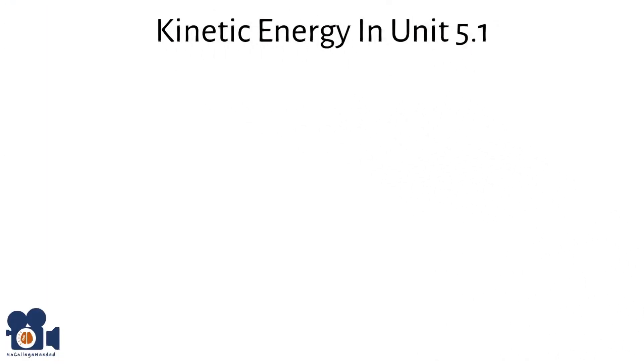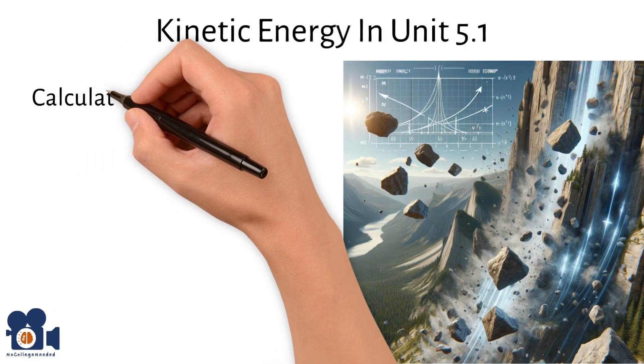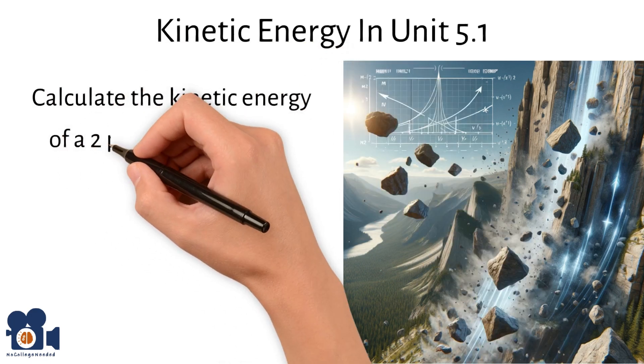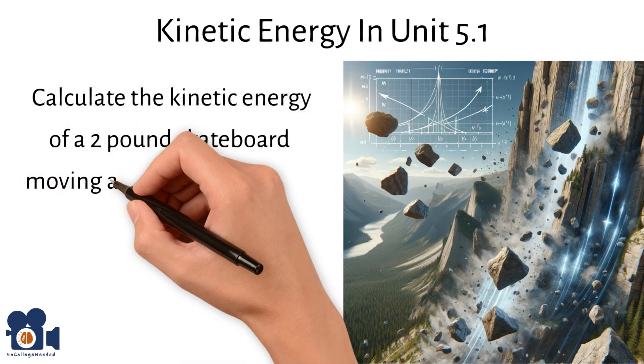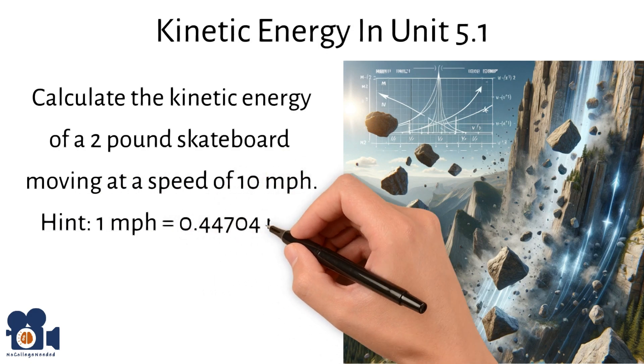With kinetic energy in unit 5.1, calculate the kinetic energy of a 2-pound skateboard moving at the speed of 10 miles per hour. Hint: 1 mile per hour is 0.44704 meters per second.